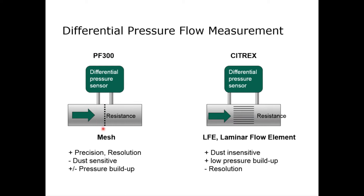In the case of the PF300, we use a mesh which is a highly linear resistance and it is also highly sensitive for small flows. In the case of Citrix, we use a so-called laminar flow element which is also very linear but a little less sensitive for low flows.